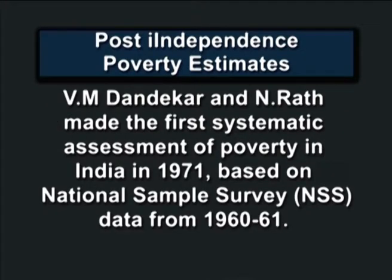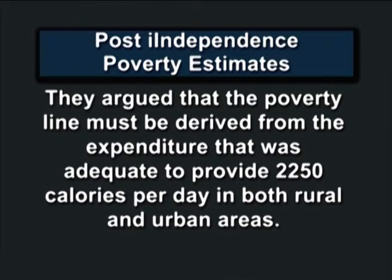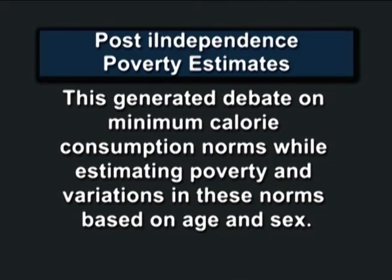V.M. Dandekar and N. Rath made the first systematic assessment of poverty in India in 1971, based on National Sample Survey data from 1960-61. They argued that the poverty line must be derived from the expenditure that was adequate to provide 2250 calories per day in both rural and urban areas. This generated debate on minimum calorie consumption norms while estimating poverty, and variations in these norms based on age and sex.